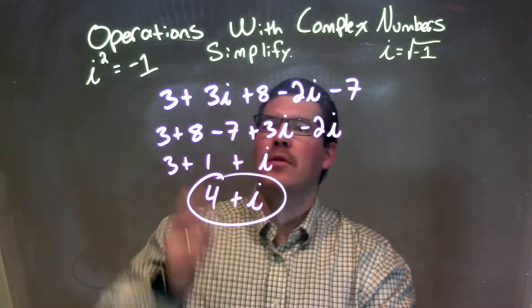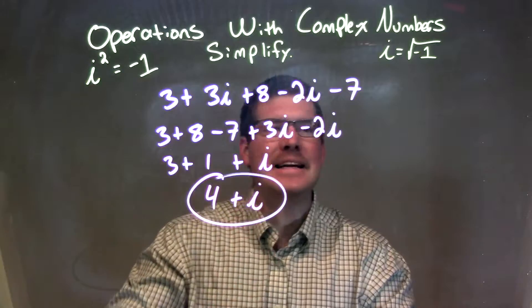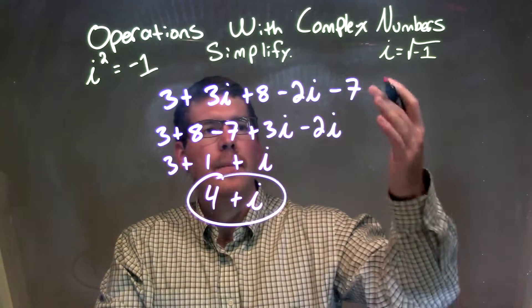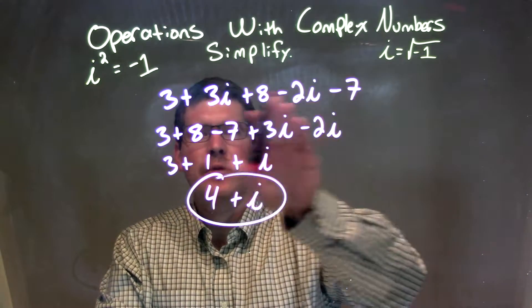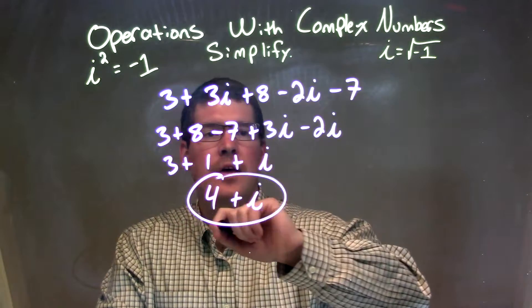So let's recap. We're given 3 plus 3i plus 8 minus 2i minus 7. We want to combine our like numbers, so I rearrange our like numbers up front: 3 plus 8 minus 7,